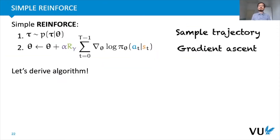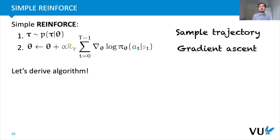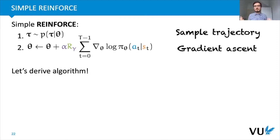Let's look at a very simple gradient estimation algorithm, which is called simple REINFORCE. We sample in a loop a trajectory, and then we're going to update our parameters by using a gradient ascent step that uses the sampled discounted reward to go, r_gamma. And then take a sum over all the gradients of log policy probabilities. You might wonder what's going on here — we'll derive the algorithm and hopefully you'll understand.